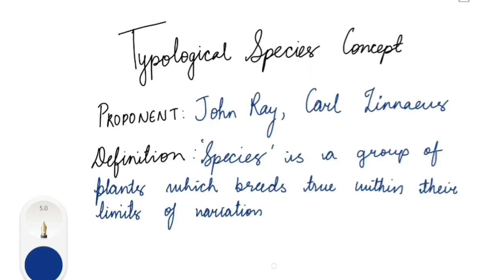The typological species concept was proposed by John Ray and later supported and elaborated by Linnaeus, the father of taxonomy. According to this concept, species is defined as a group of plants which breeds true within their limits of variation.